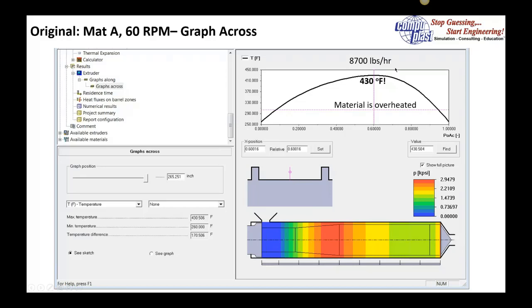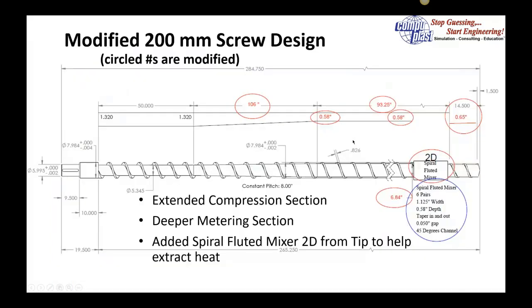On this 8-inch extruder, they're getting 8,700 pounds an hour with a peak temperature of 430 degrees Fahrenheit in the middle. This happened to be too much for this particular material, causing the residual moisture in the material to gas off and giving them their problem.